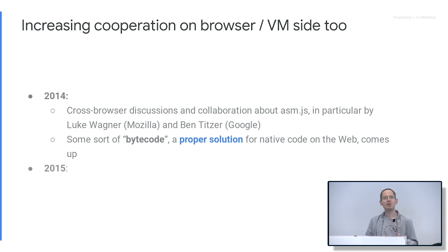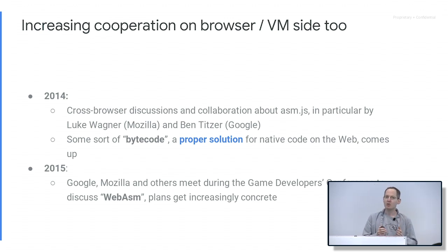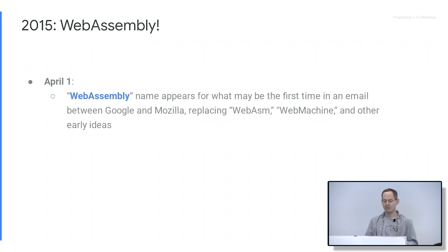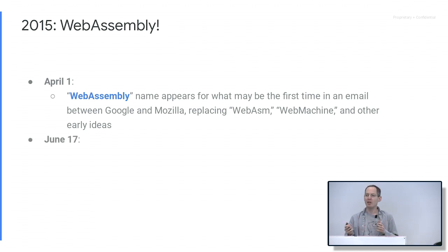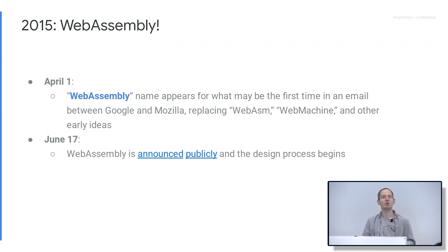In 2015, Mozilla, Google, and others met during GDC — the Game Developers Conference — to talk more about what we called at the time 'Webasm.' The plans got increasingly concrete. We announced WebAssembly in 2015. We think it was around April that we came up with the name — we found emails mentioning it replacing other names that were thrown around. We spent a few weeks working behind the scenes; we had agreement between all the major browsers that we were going to standardize a new thing called WebAssembly. We prepared a website and a process, then launched it publicly — announcing we were starting the process of speccing and designing this thing. That was on June 12th.